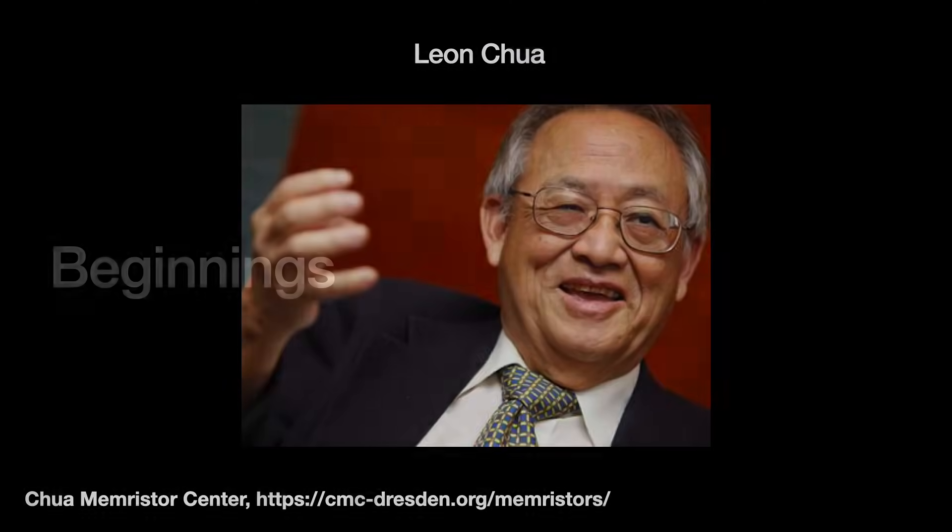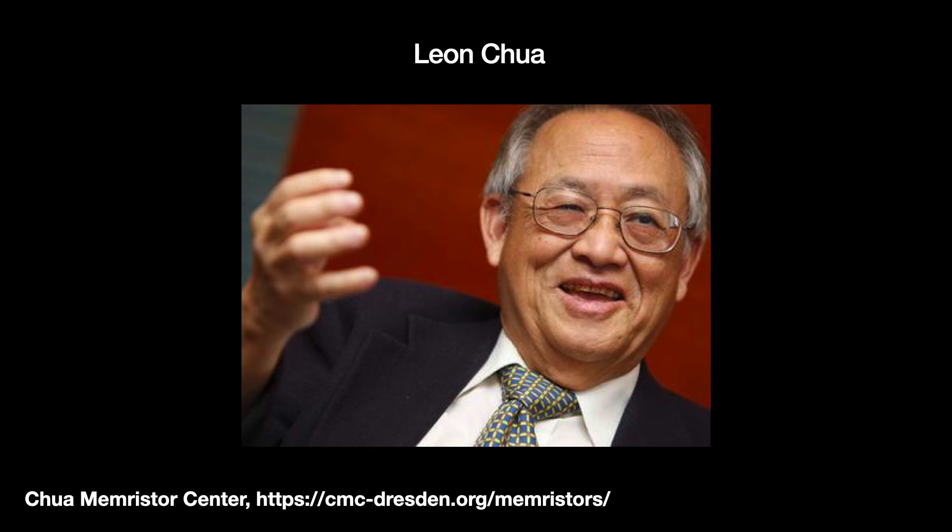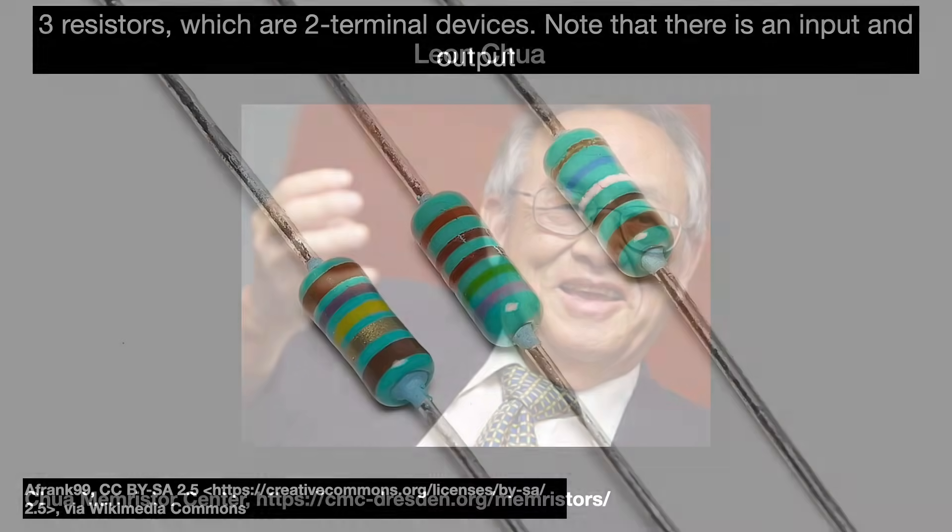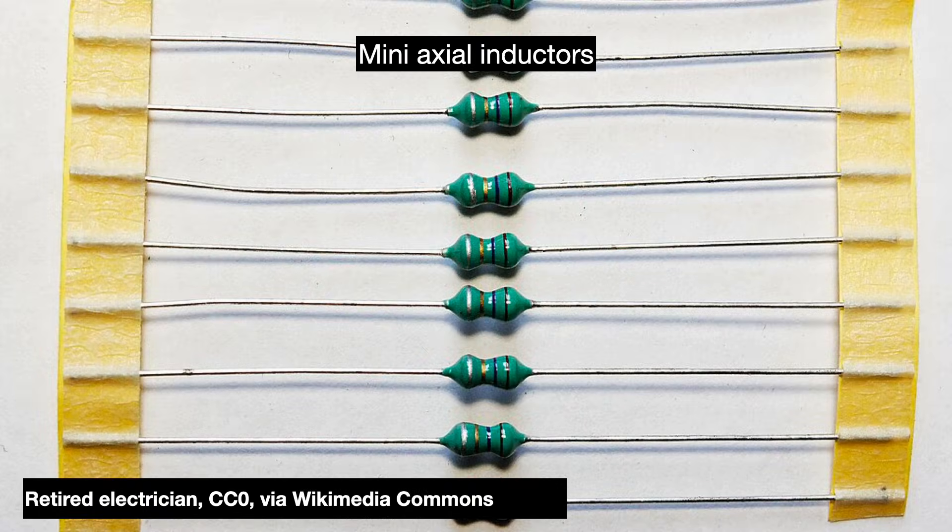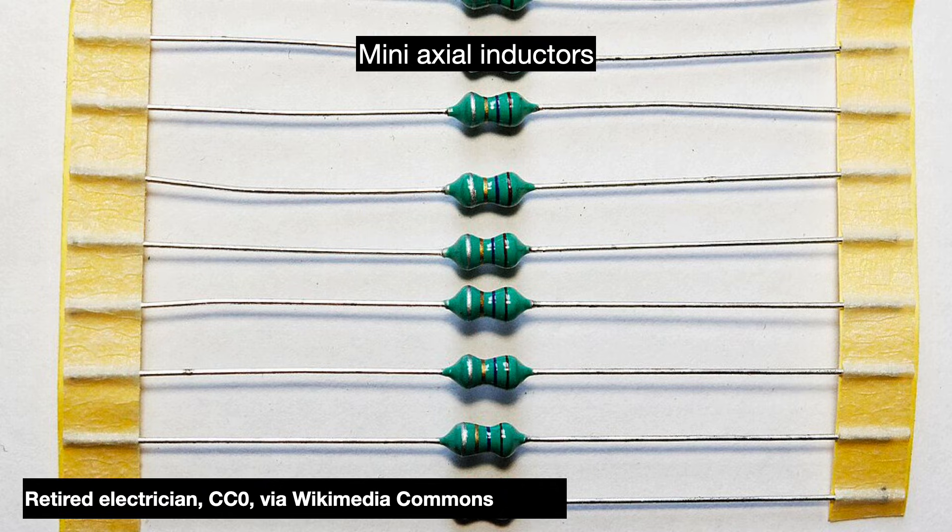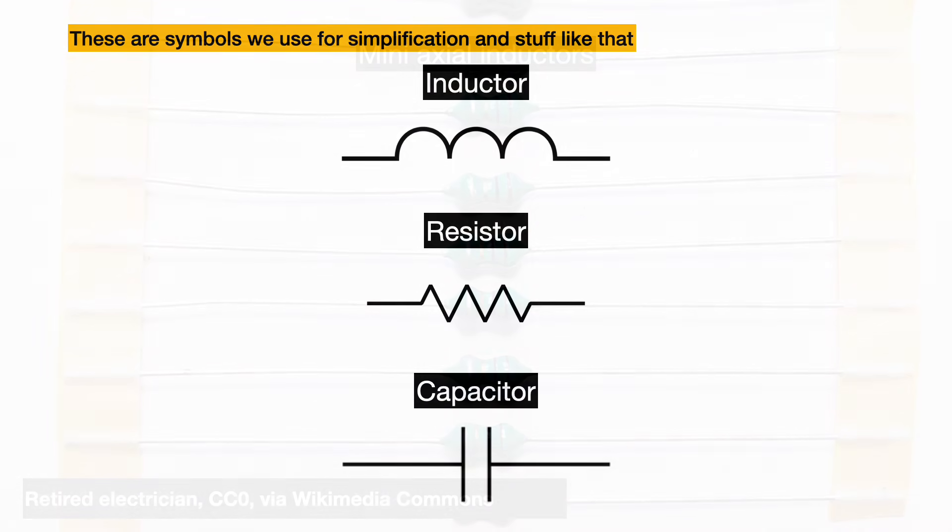Chua's 1971 paper began by laying out some interesting connections between the three fundamental two-terminal circuit elements. Two-terminal meaning there are two connections, the current flowing through from one to the other. By comparison, the transistor is a three-terminal device. These three elements were also passive, meaning they did not use energy. This is in contrast to the transistor which requires voltage to work. These three passive elements were the resistor, capacitor, and inductor.